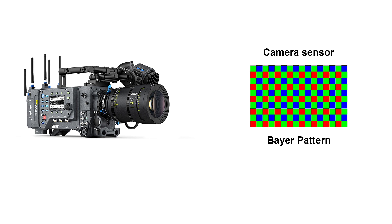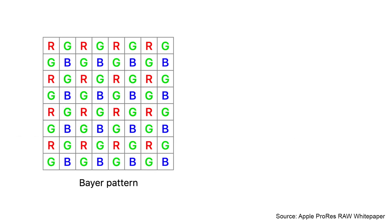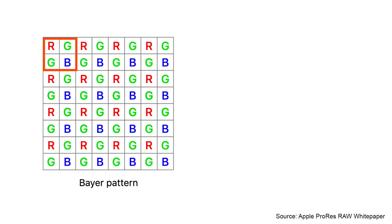To capture color, most current digital cameras use a color filter array that yields a single primary color value — such as red, green, or blue — at each photocyte location. The most used color filter arrangement is known as a Bayer pattern, where each 2x2 group of photocytes consists of one red, one blue, and two green sensor elements.